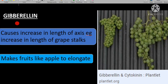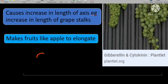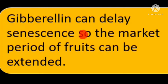The plant growth regulator gibberellin causes an increase in the length of axes — for example, the length increase in grape stalks. It also makes fruits like apple elongate. Gibberellin can delay senescence, that is old age, in plants, so the market period of fruits can be extended.